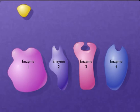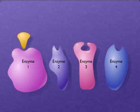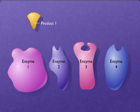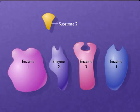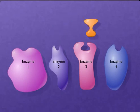In such pathways, a substrate is converted into a product by the first enzyme in the pathway, and the product of the first reaction then becomes the substrate for the second enzyme. The sequence of reactions continues until the final product is made.